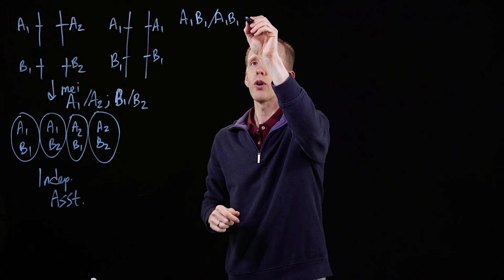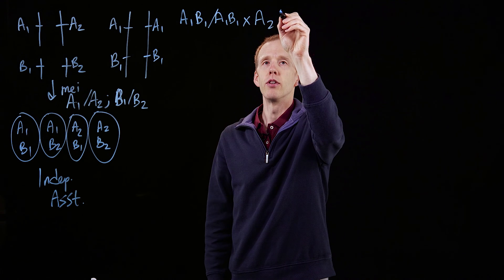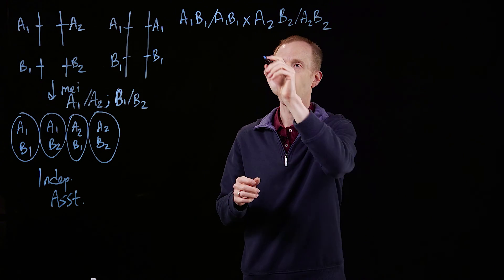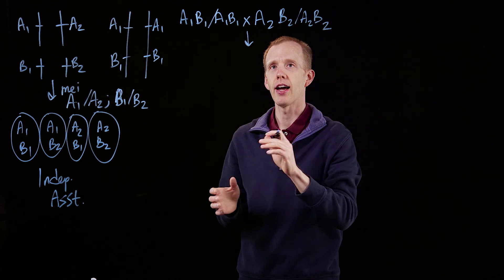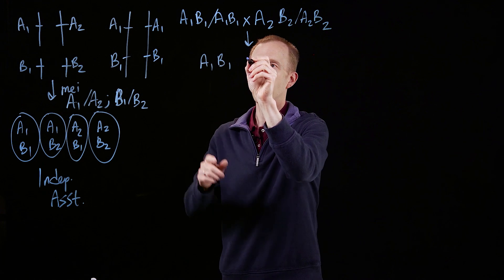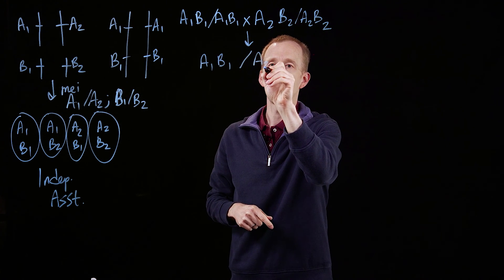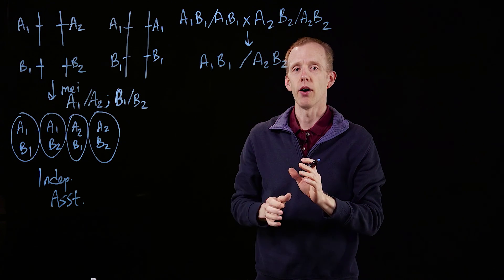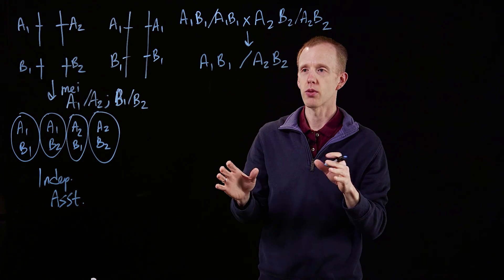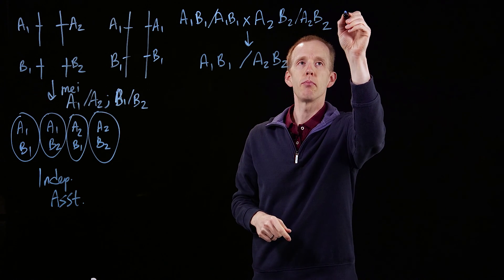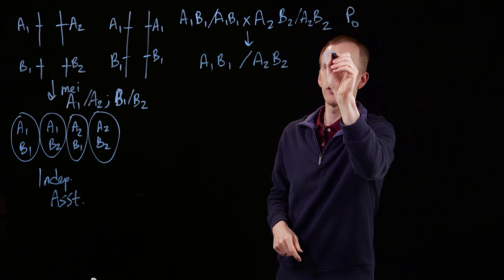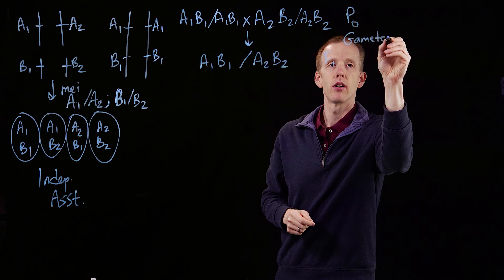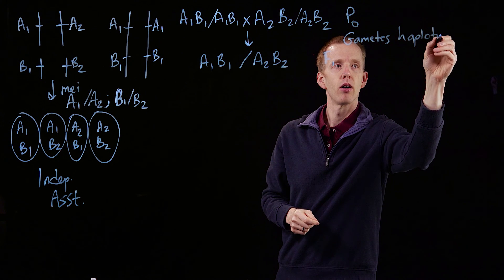We could cross that individual to one that's homozygous for the other alleles of each of those genes, and that's a cross that will generate an individual called a dihybrid, with A1B1 coming from one parent and A2B2 coming from the other parent. This is where we're going to see how independent assortment and linkage disrupts the expectations coming out of meiosis. So this is the P0 generation, and here's the F1 generation. Let's take a step back and look at the gametes produced by the P0 generation and their haplotypes.